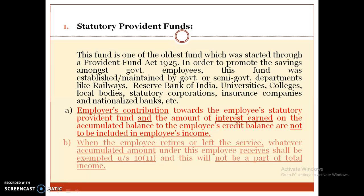The employer's contribution towards the employee's Statutory Provident Fund and the interest earned on the accumulated credit balance are not to be included in the employee's income. When the employee retires or leaves the service, the accumulated amount received shall be examined under Section 10(11) and will not be a part of total income.